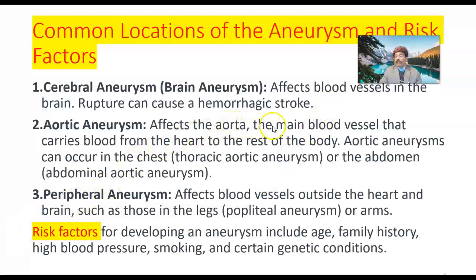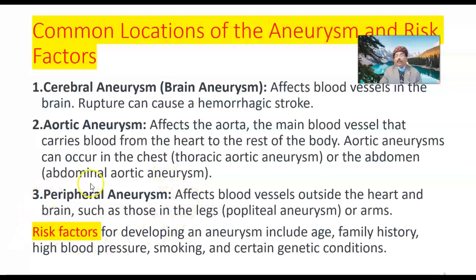Aortic aneurysm affects the aorta, the main blood vessel that carries blood from the heart to the rest of the body. Aortic aneurysms can occur in the chest — thoracic aortic aneurysm — or the abdomen — abdominal aortic aneurysm. Locations include the ascending aorta, arch of aorta, descending thoracic aorta, abdominal aorta, and even major branches. A common location is between the renal artery and the bifurcation of the aorta.